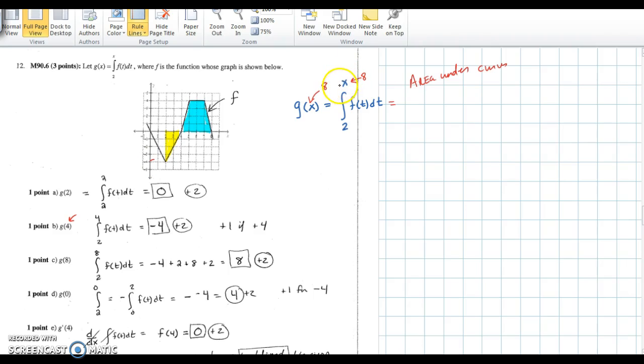The next value you're looking for is g of 8, so 8 will go in for x, and we're finding the area from 2 all the way to 8. Well, this was already determined to be negative 4, and this is 12. Since there is 12 on the positive side and 4 on the negative side, our total area is 8.